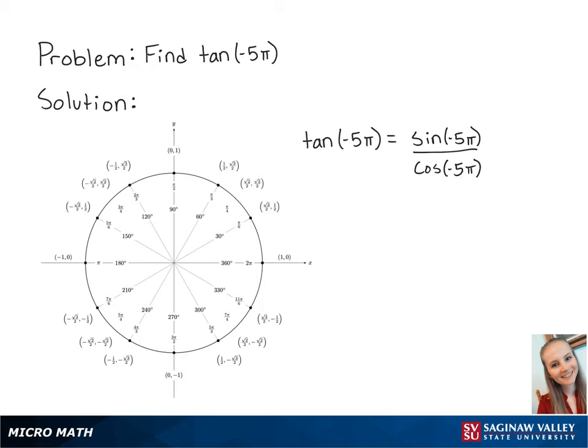Looking at the unit circle, if we want to get to negative 5 pi, we will start at 0, and if we travel backward two full times, we will be at negative 4 pi. If we travel backward an additional distance of pi, we will be at negative 5 pi.